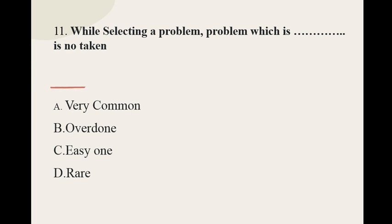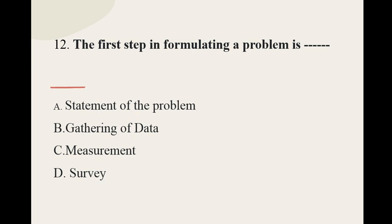Question number eleven: While selecting a problem, a problem which is dash is not taken — the options are: very common or overdone, easy one, rare. The correct option is overdone. Question number twelve: The first step in formulating a problem is — the options are: statement of the problem, gathering of data, measurement and survey.